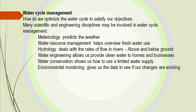We need to optimize the water cycle and study it in many different ways. Meteorology predicts the weather. Water resource management looks at how we use our fresh water. Hydrology examines the rate of flow of rivers and how we change that flow — we're removing more and more dams. Water engineering provides clean water. Water conservation reminds us that our limited water needs to be carefully managed.